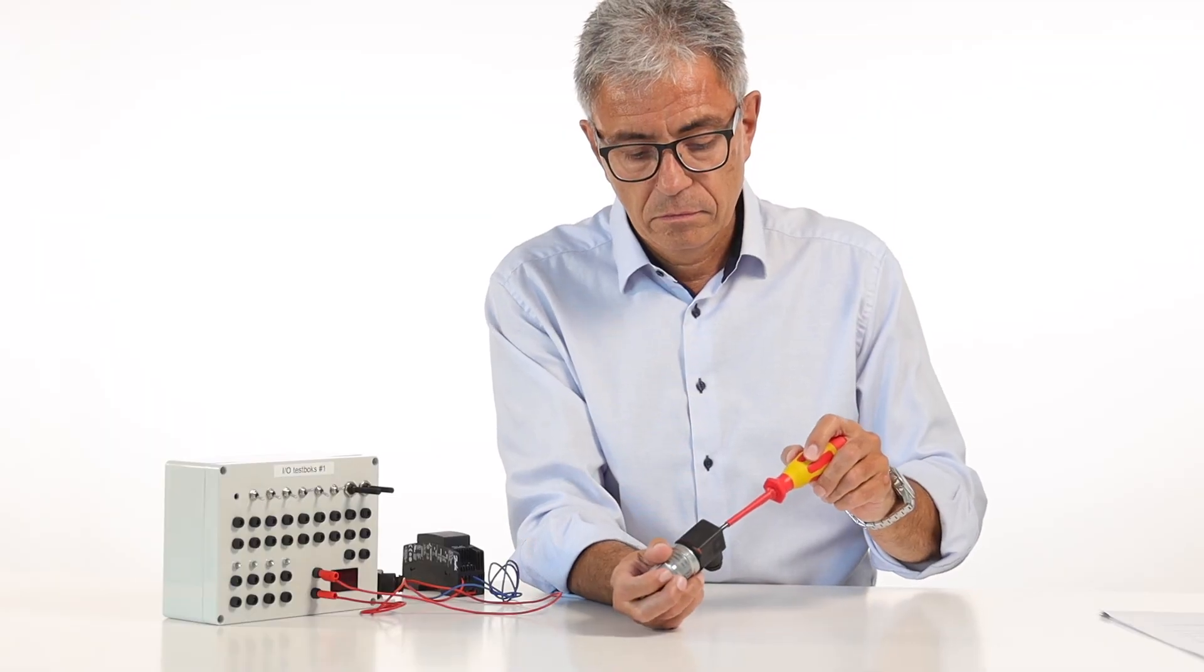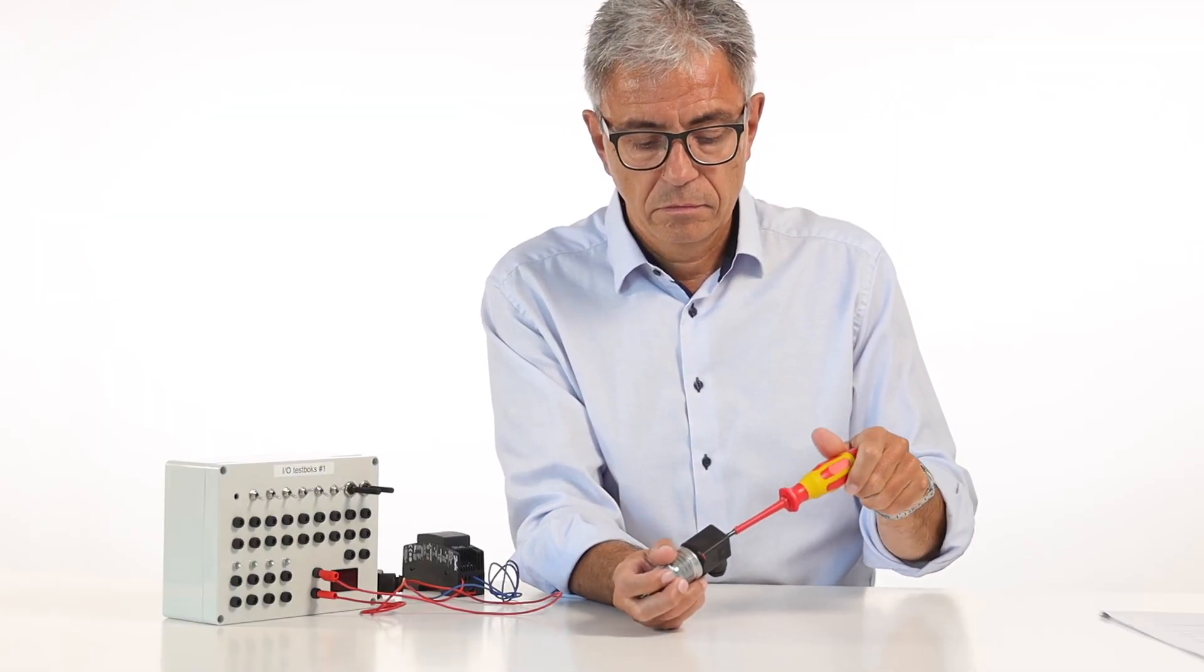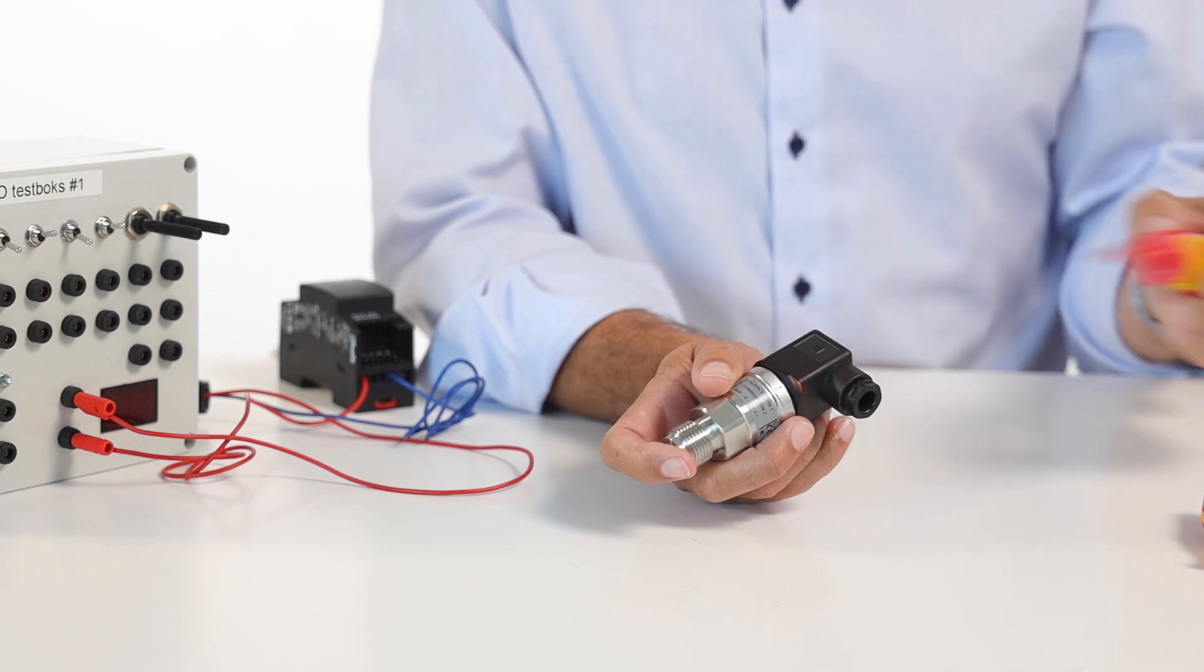First, remove the DIN plug from the pressure transmitter. This is done by removing the screw in the top of the plug with a screwdriver.